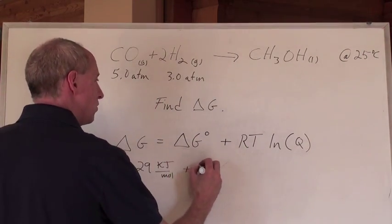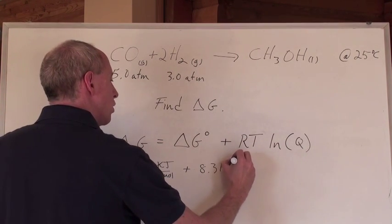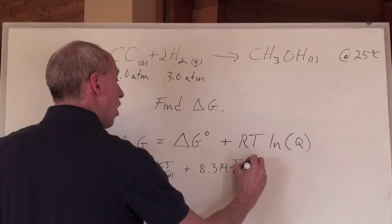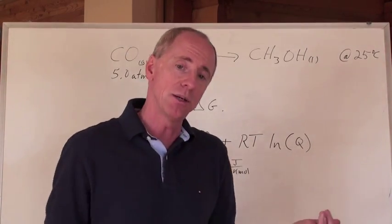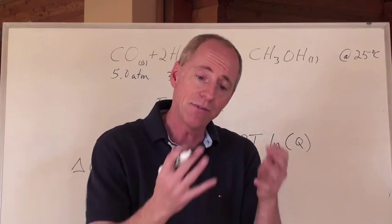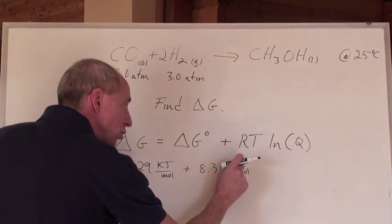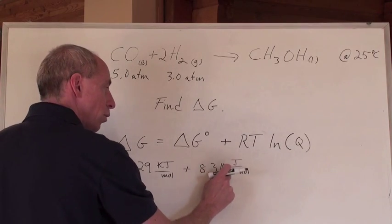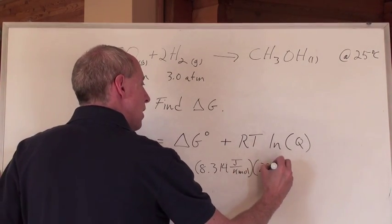And it's plus R, which is 8.314 joules per kelvin mole. That's the R value that you need to use. Your data booklet or data sheet that you're going to be given for an exam is going to have two values for R, maybe even three. They're going to have universal gas constant numbers, but whenever you're using energy in a calculation, you need to use the joules per kelvin mole, 8.314. Times what? Times the temperature, 298K.